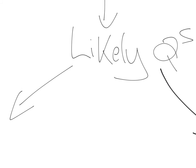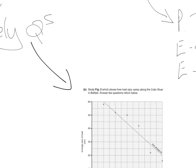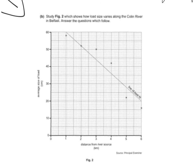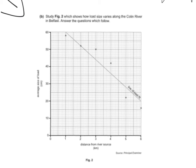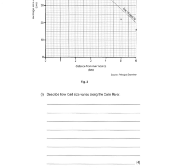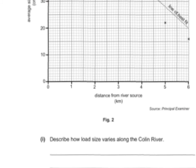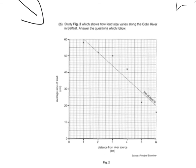The question doesn't really change year on year, but the presentation of the graph or the information or the table does. So again, here's a similar set of data. This time it's been presented on this type of graph. Distance from the source is along the bottom. Average size of load is up the side. So describe how load varies along the Colin River. Same process as we did before.